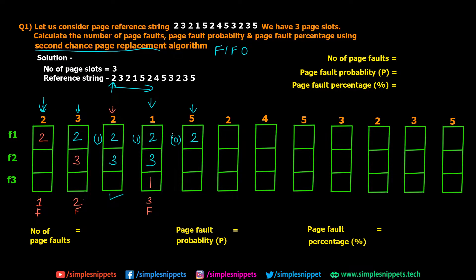So this is how the second chance page replacement algorithm works. If it were plain FIFO we would have replaced page 2, but because its reference bit was set to 1, it got a second chance. That is the 4th page fault. Now page 2 is requested again and page 2 is already in memory, so this is not a page fault. Because page 2 was repeated, its reference bit is set back to 1.